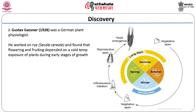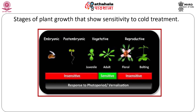J. Gustav Gassner, in 1928, was a German plant physiologist who worked on rye (Secale cereale) and found that flowering and fruiting depended on cold temperature exposure of plants during early stages of growth. Gassner planted winter rye in spring; the seeds germinated and produced vegetative plants but did not flower until late in the growing season. He found that winter Petkus rye could be given low temperature requirement artificially by placing imbibed seeds at chilling temperatures of 2 to 5 degrees centigrade for 5 to 6 weeks. He planted the chilled seeds in spring and they grew and flowered like spring rye. Thus, he discovered the phenomenon of vernalization.